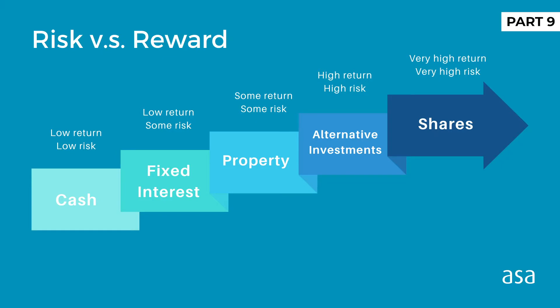Asset allocation is just a framework of how much of your investments should go into each of those asset baskets — cash, fixed interest, Australian shares, international shares, and property. Each of these has a different benefit like liquidity, safety, or franking credits, and each also has a different risk or downside. It is a balance between the risk you're happy to take and the returns you need to get from your investments.